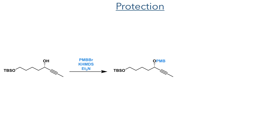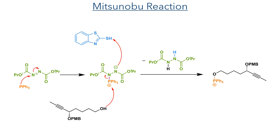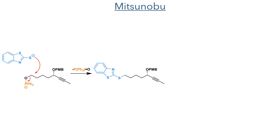With this chiral centre now created, the hydroxyl group was protected as a PMB group and the silyl group was deprotected using TBAF. In the next step, the newly revealed hydroxyl group took part in a Mitsunobu reaction. Triphenylphosphine first attacks DIAD, and the resulting anion deprotonates mercaptobenzothiazole. The phosphonium intermediate is attacked by the hydroxyl group, forming an activated oxygen species, which can then be attacked by the negatively charged sulfur atom, eliminating triphenylphosphine oxide and forming a carbon-sulfur bond.